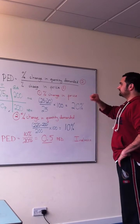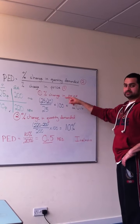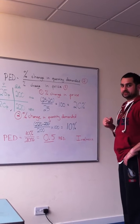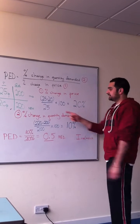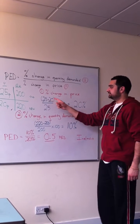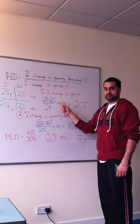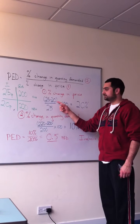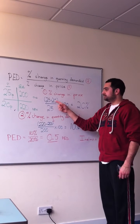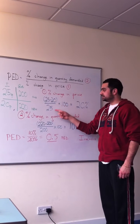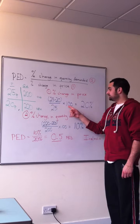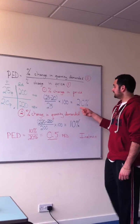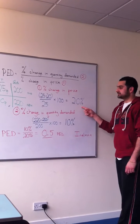The first thing we're going to look at is the percent change in price. How do we calculate that? We take the difference in price — the 5p — put it over the original price, multiply it by 100, and we get 20%.